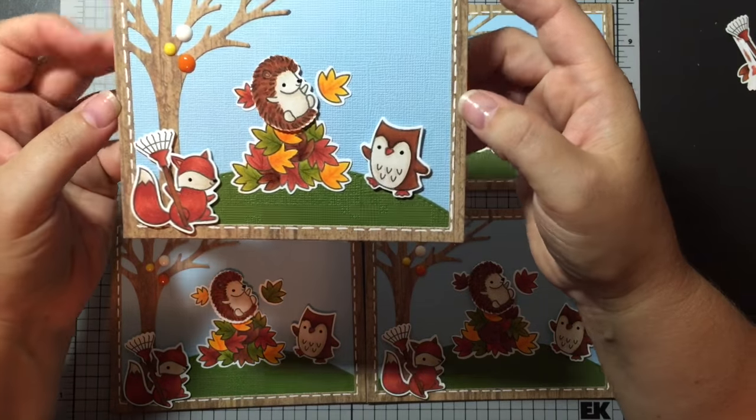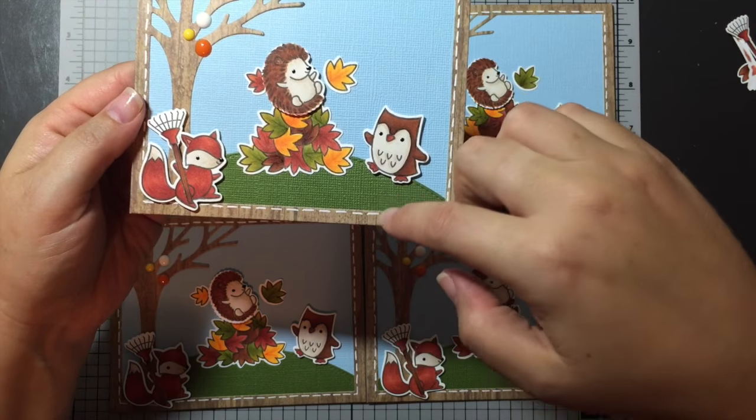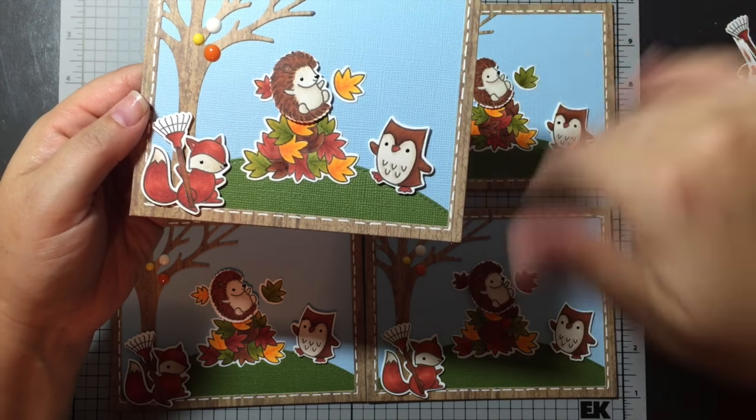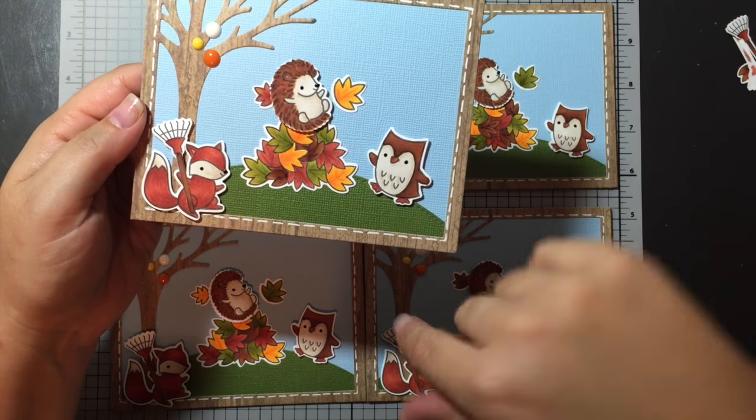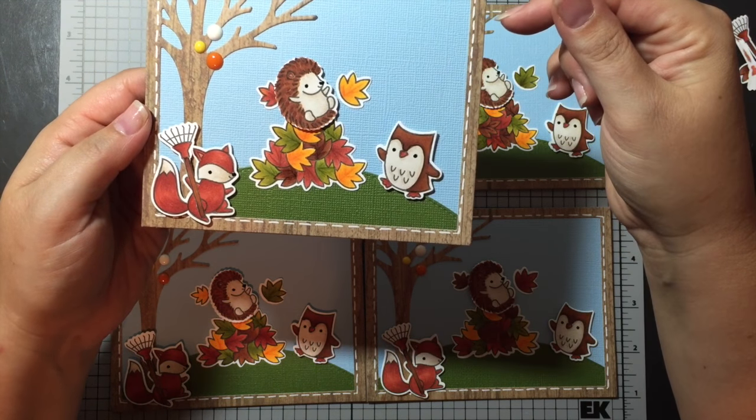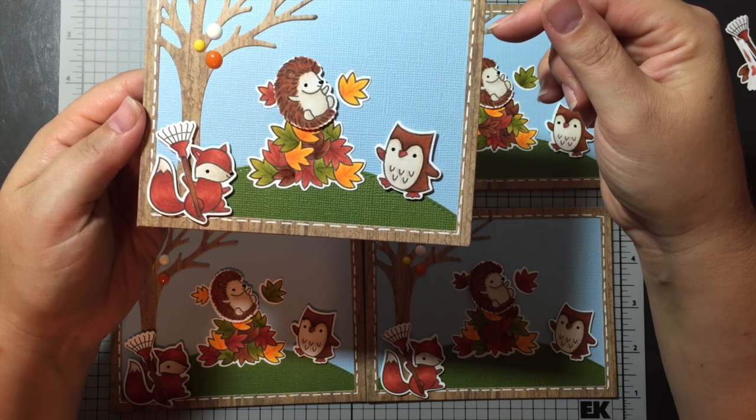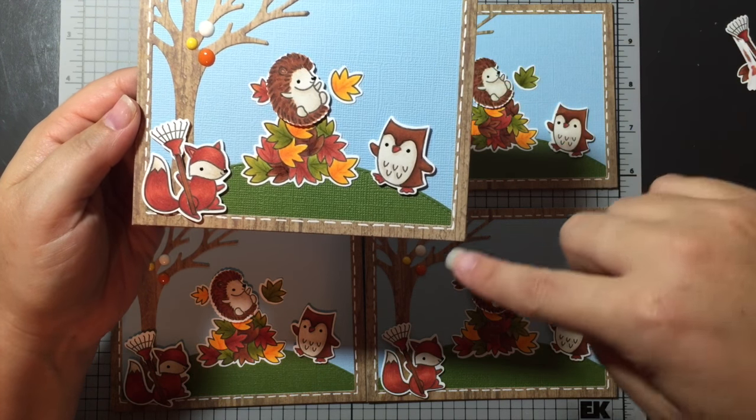So here they are. Basically what I did, I do show a process on how I did the background and layer them all together because I used a funky die in there and you'll see when you see the process video.